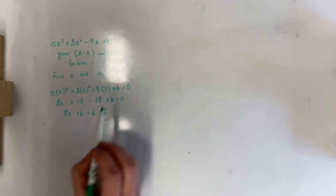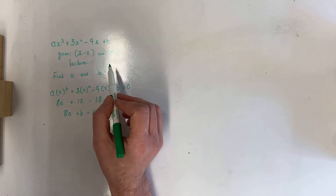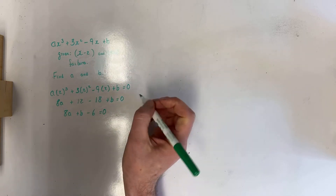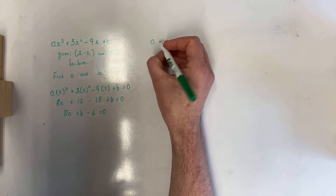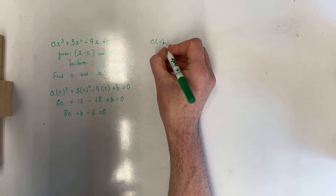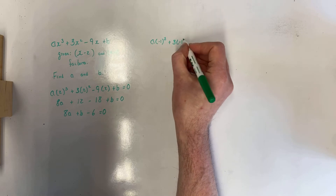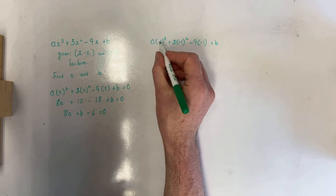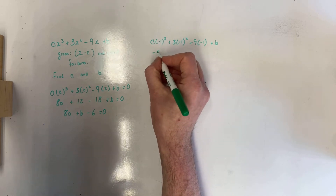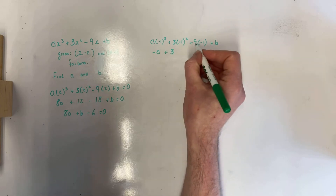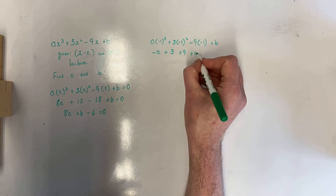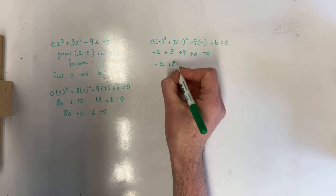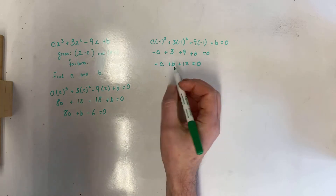I'm going to use my other factor. If x plus 1 is a factor, then negative 1 is a root. That means putting in negative 1 for x makes the polynomial equal to 0. So: a times (-1)³ plus 3 times (-1)² minus 9 times (-1) plus b equals 0. That gives -a plus 3 plus 9 plus b = 0, which simplifies to -a + b + 12 = 0.